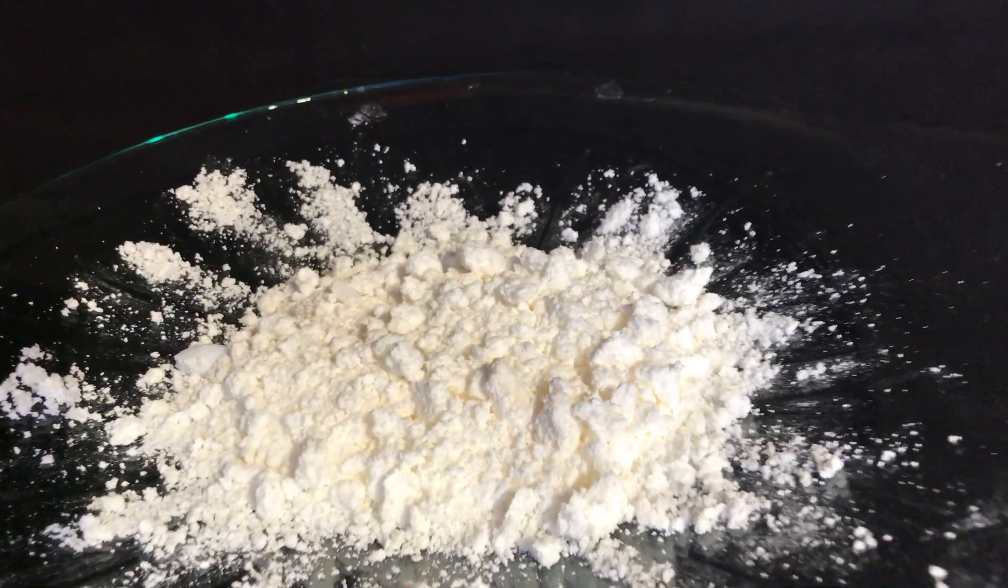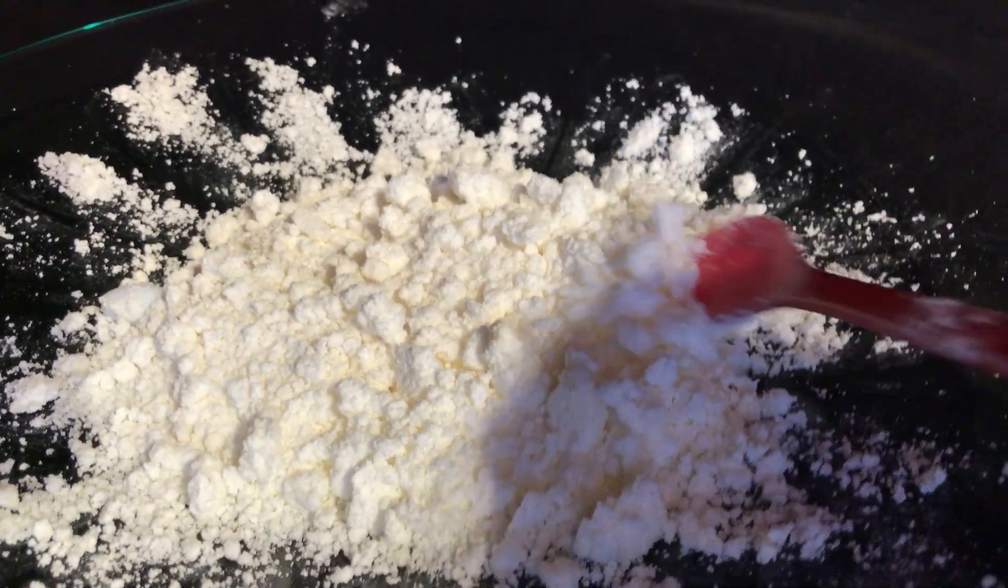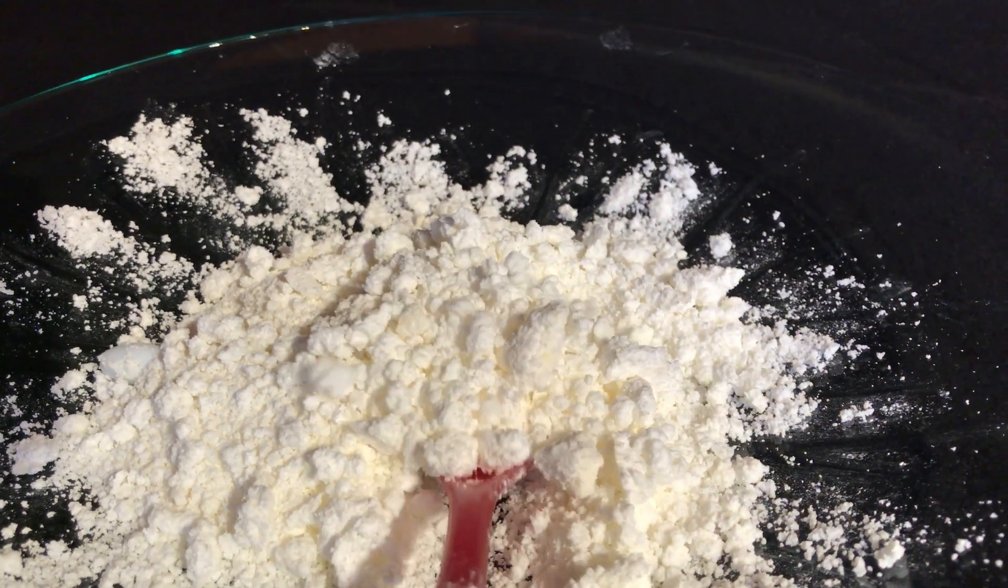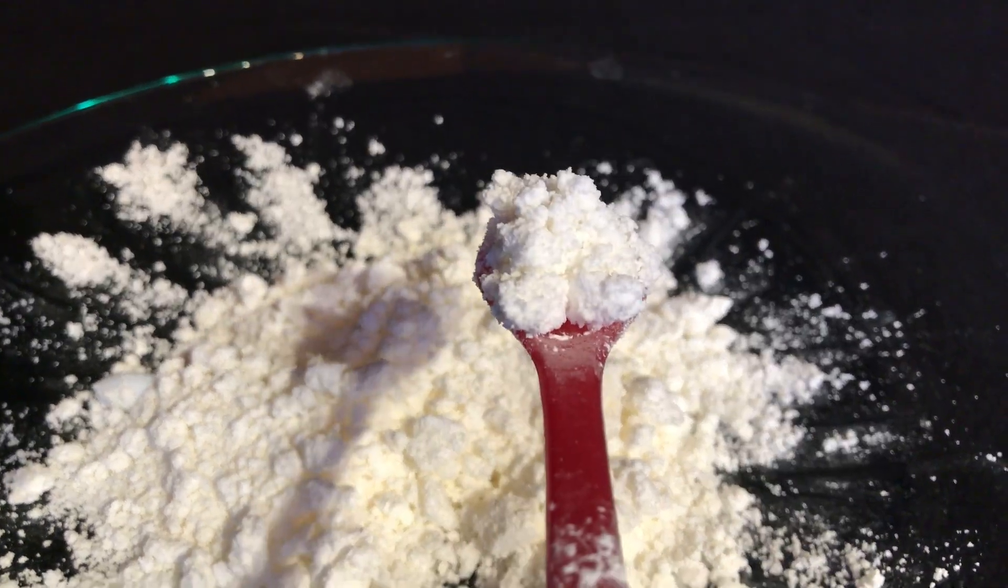We obtained 64 grams of benzoic acid with this method, representing a yield of 84.2%. Now that you've seen the classic method to make benzoic acid, I'm going to show you another method utilizing benzoin made from benzaldehyde and potassium bromate.